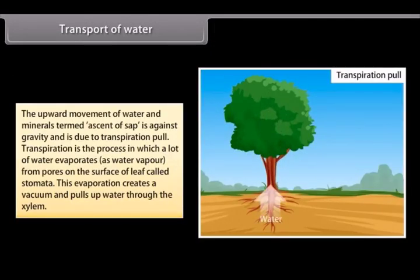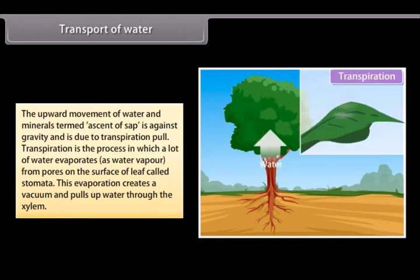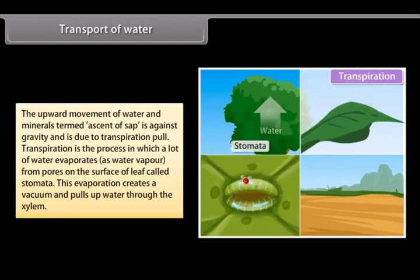The upward movement of water and minerals termed ascent of sap is against gravity and is due to transpiration pull. Transpiration is the process in which a lot of water evaporates as water vapor from pores on the surface of leaf called stomata. This evaporation creates a vacuum and pulls up water through the xylem.